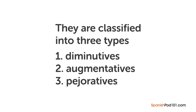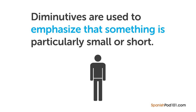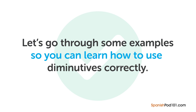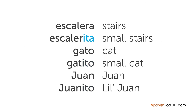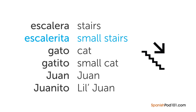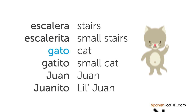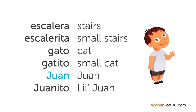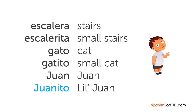Diminutives are used to emphasize that something is particularly small or short, and also to express love and affection. A very common suffix is -ito or -ita. From 'escalera' meaning stairs, we get 'escalerita' to express that the stairs are small. From 'gato' meaning cat, we get 'gatito,' adding tenderness. You can even use this with names — 'Juan' becomes 'Juanito' when talking about someone colloquially, most likely a child.